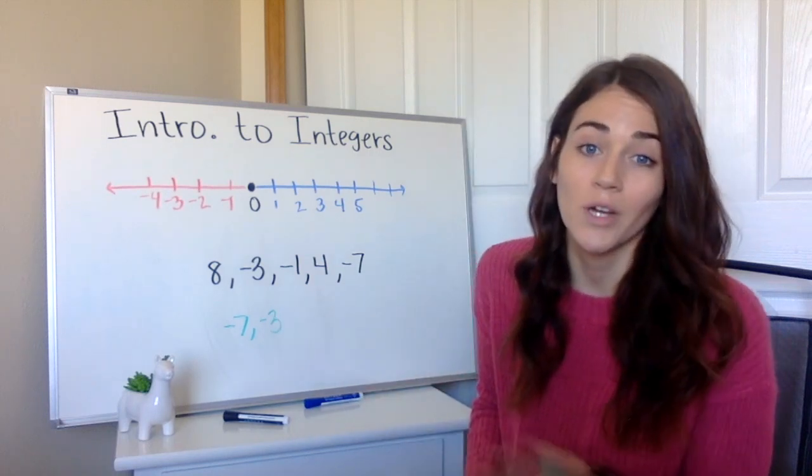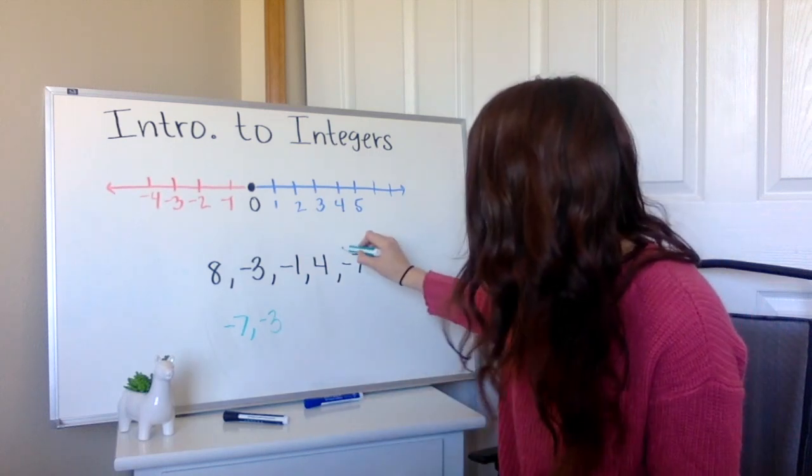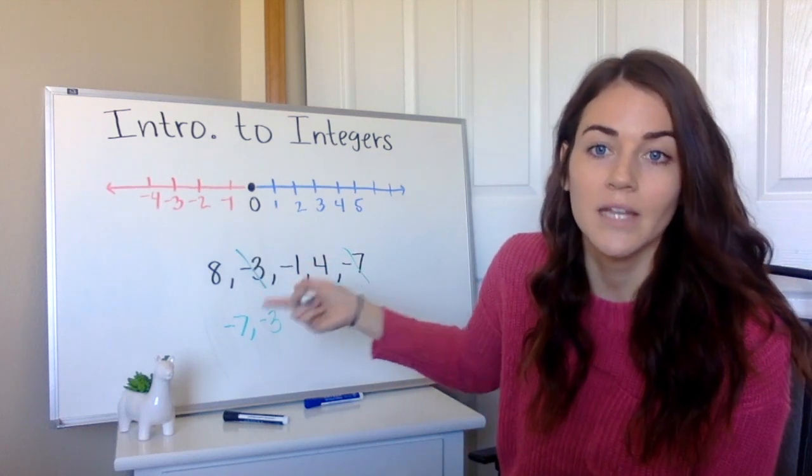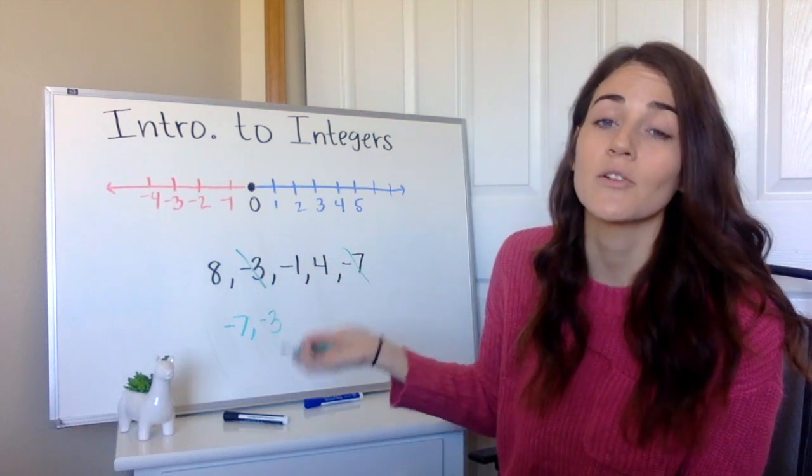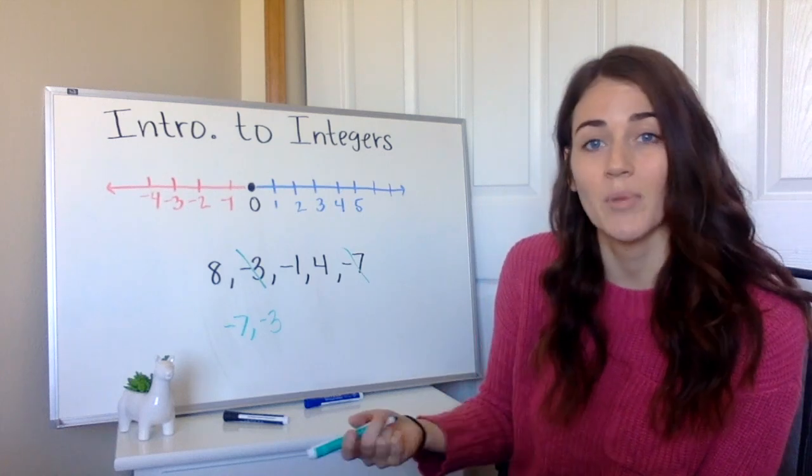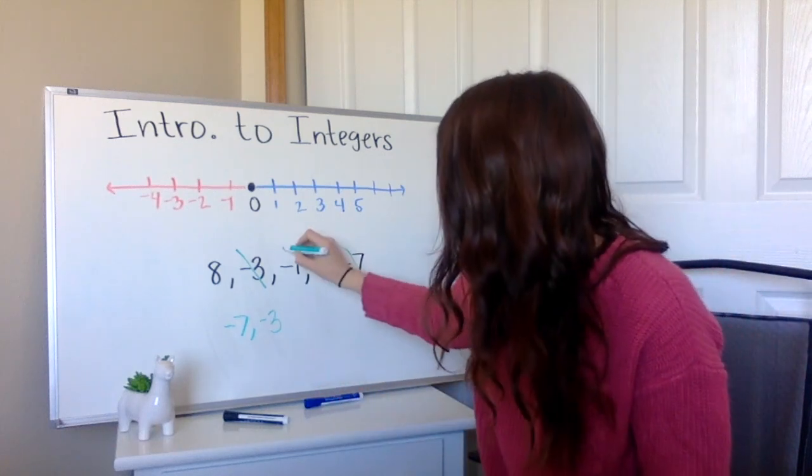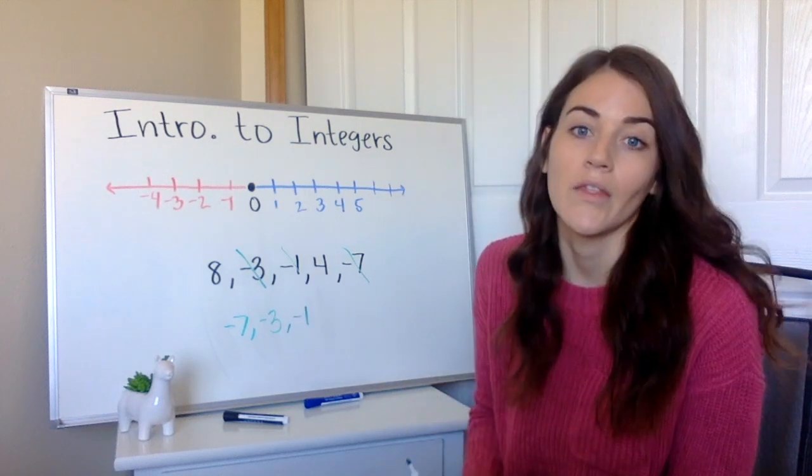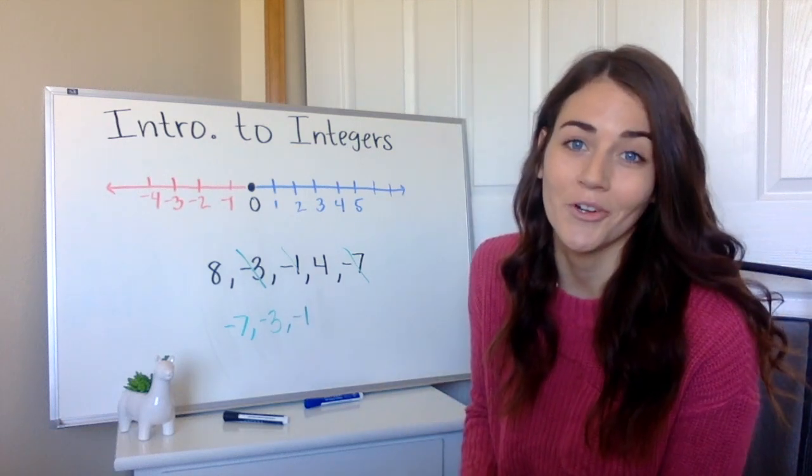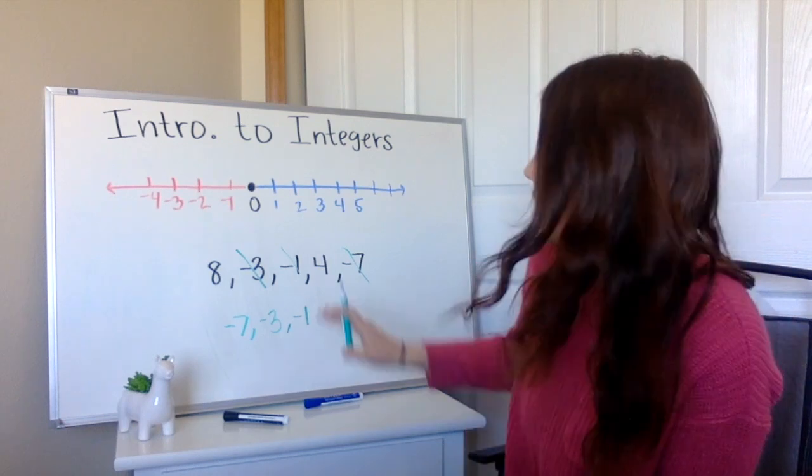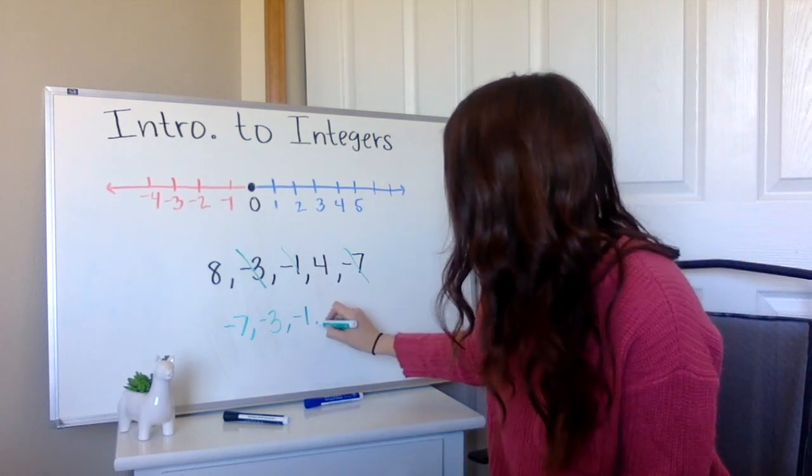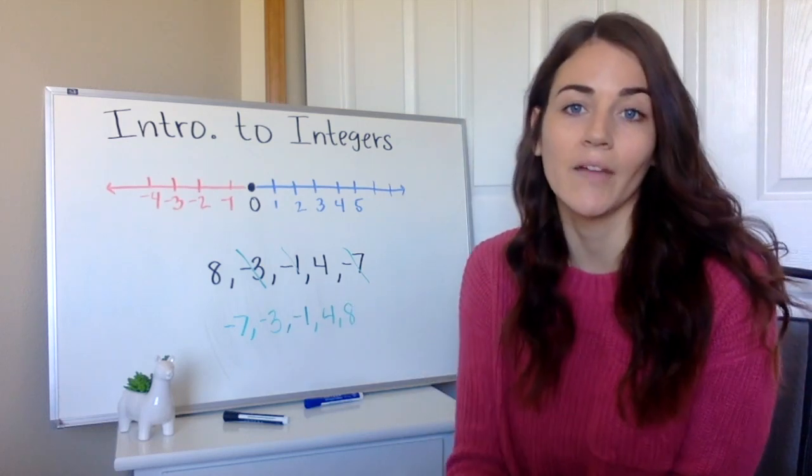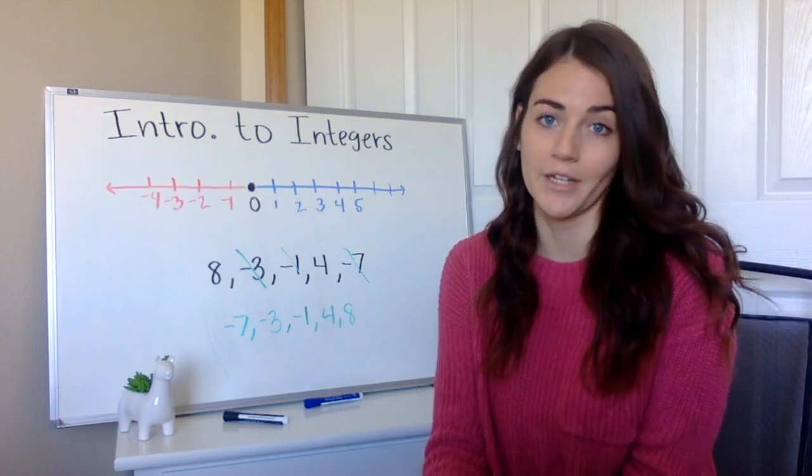And then I have one negative number left. I'll go ahead and cross these out. I have one negative number left and two positives. And like we said earlier, our negative is always going to be smaller than any positive. So of course we have our negative one coming next. And then we should have lots of practice ordering our positive numbers. So then we would have four and eight. And now we have those ordered from least to greatest.